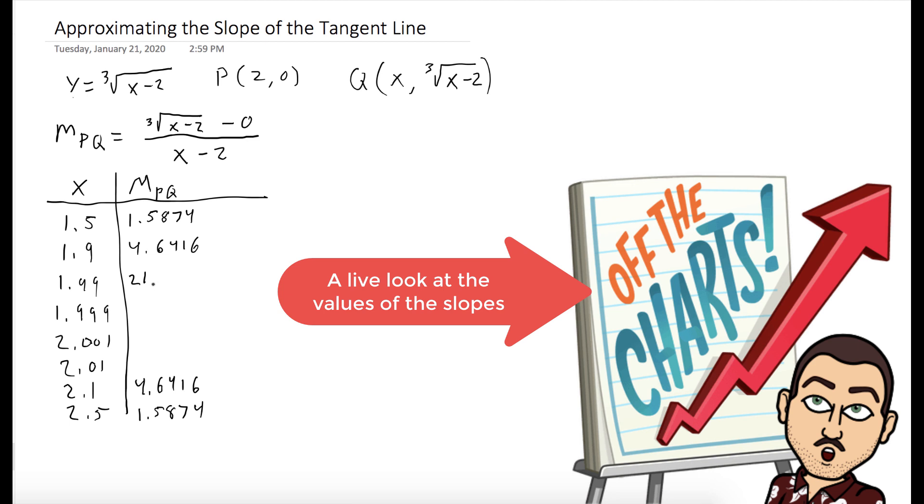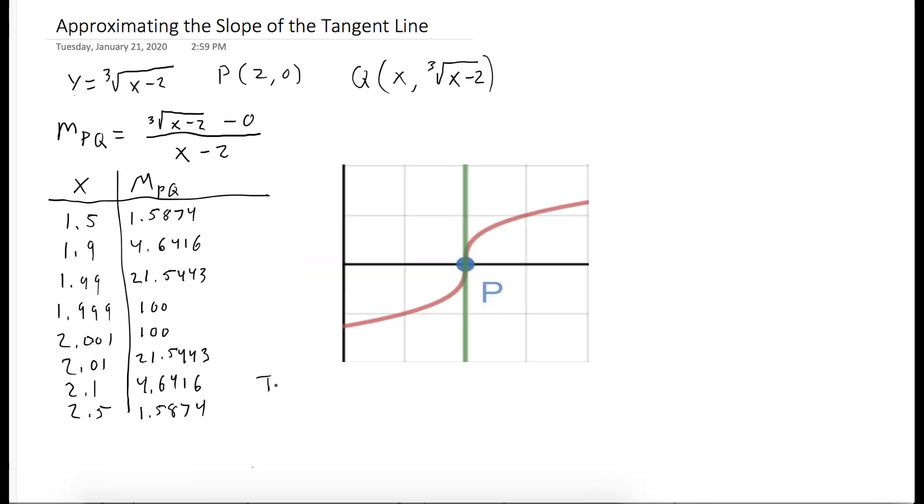Plugging in 1.99, we get something much bigger, 21. Plugging in 1.999, we get up to 100. And as you can see, in fact, this tangent line is vertical.